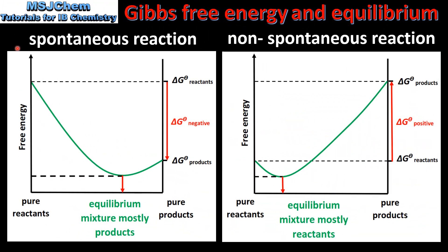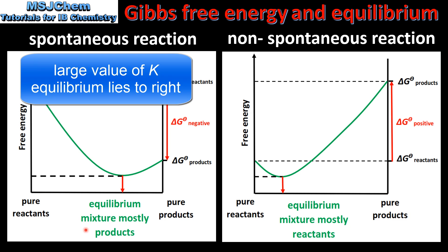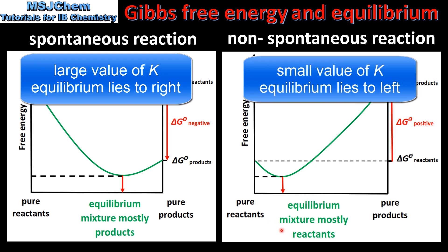Next we'll compare the composition of the equilibrium mixture for a spontaneous reaction and a non-spontaneous reaction. For a spontaneous reaction, at the minimum value of Gibbs free energy the equilibrium mixture contains mostly products, giving a large value for K — meaning the equilibrium lies to the right. For a non-spontaneous reaction, at the minimum value of Gibbs free energy the equilibrium mixture contains mostly reactants, giving a small value for K — meaning the equilibrium lies to the left.